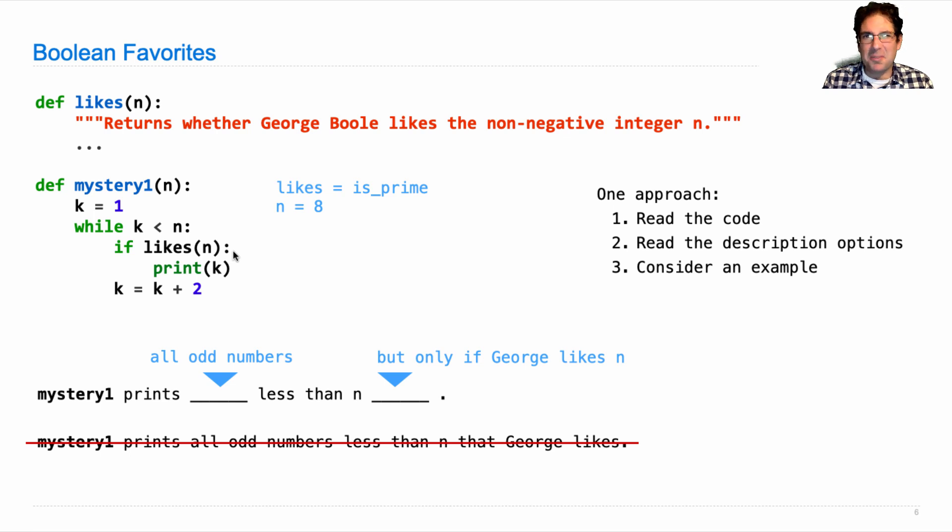So you can't solve these problems just by following your intuition or thinking about what's reasonable. The point of the problem is to make sure that you understand how the code works. And so you're going to have to think about every line and how it behaves.